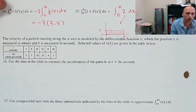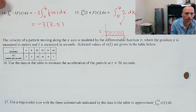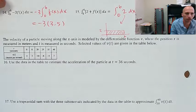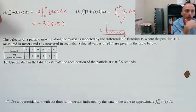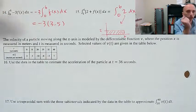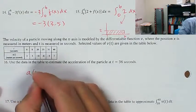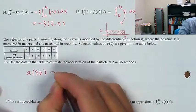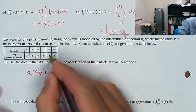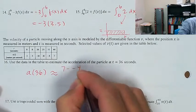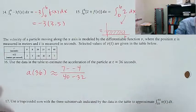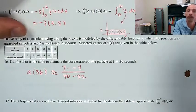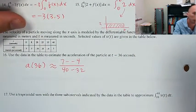Velocity of a particle moving along the x-axis is modeled by the differentiable function v, where position x is in meters and t is in seconds. Estimate the acceleration: a(36) is approximately equal to — using these two points — (7 minus negative 4) divided by (40 minus 32). That's the best estimate we have based on the data in the table.